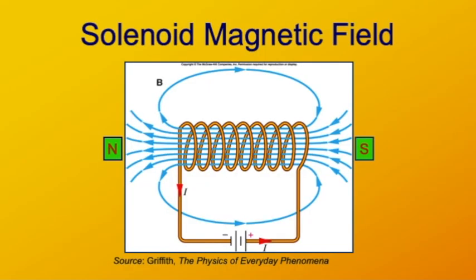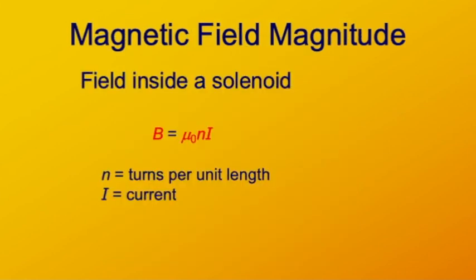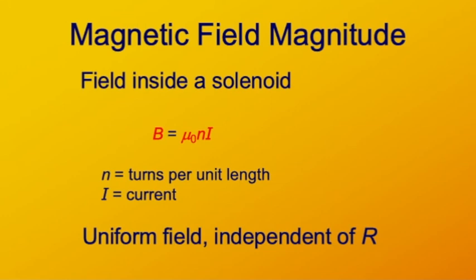The formula for the field inside a solenoid is B = μ₀nI, where n is the number of turns per unit length and I is the current. It's very simple, and interestingly the field is independent of the radius of the solenoid.